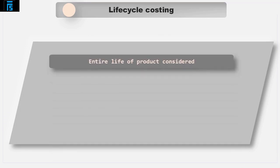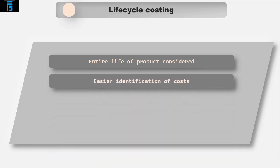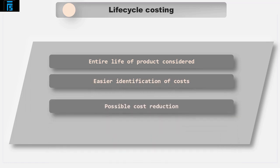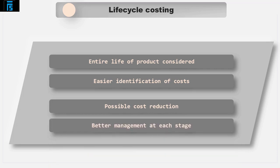Life Cycle Costing considers all costs over the life of a product: pre-production, production and post-production. By using Life Cycle Costing, a cost incurred by the company can be more easily identified, and management can then focus on reducing such costs. Environmental costs can be identified and measured at each stage of the product's life cycle, from the design stage right through to its obsolescence.